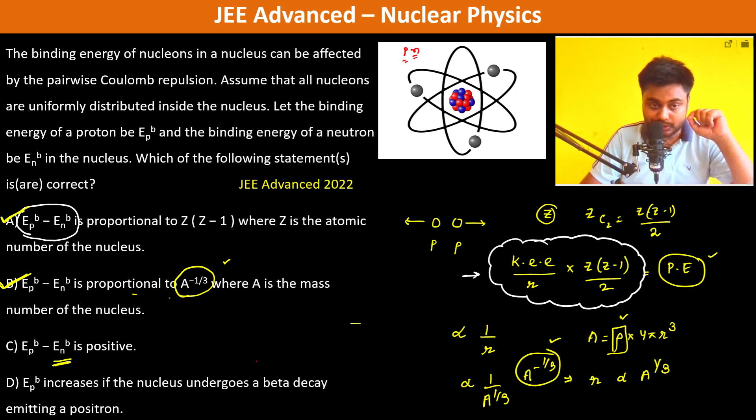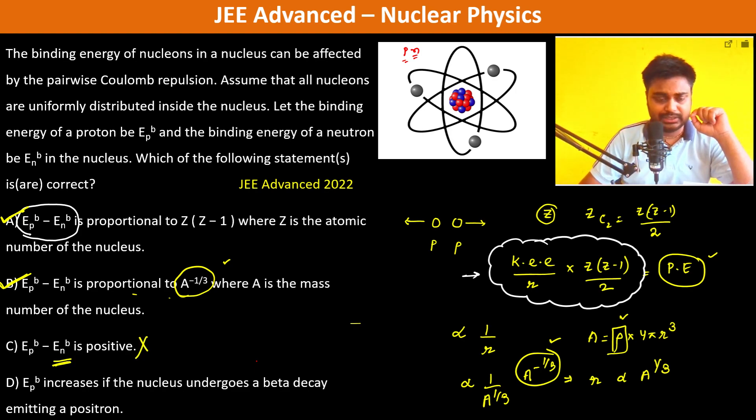Option C says the difference is positive, but since neutrons have greater binding energy, the difference Epb minus Enb is negative — so option C is false.